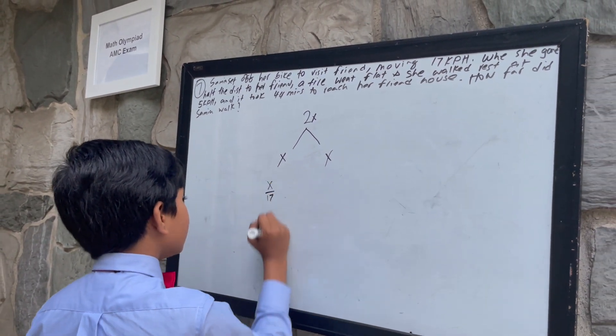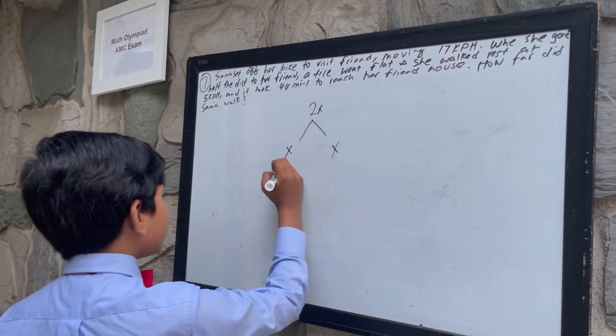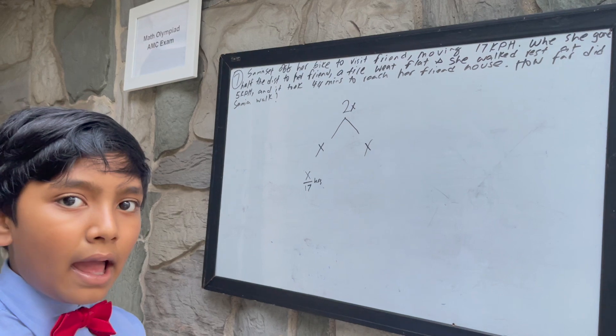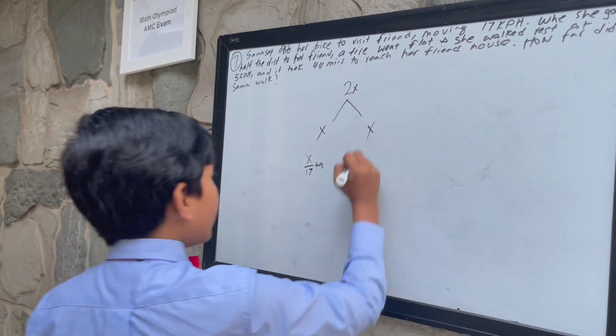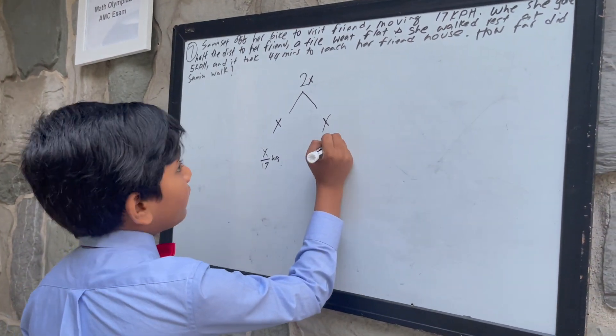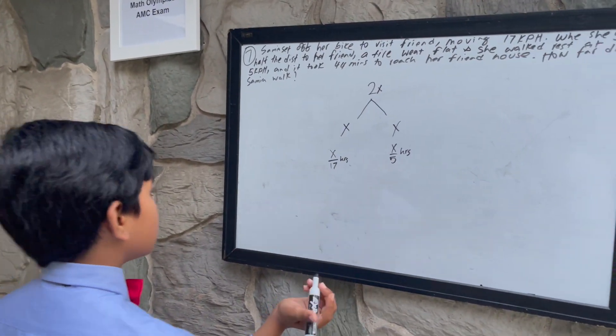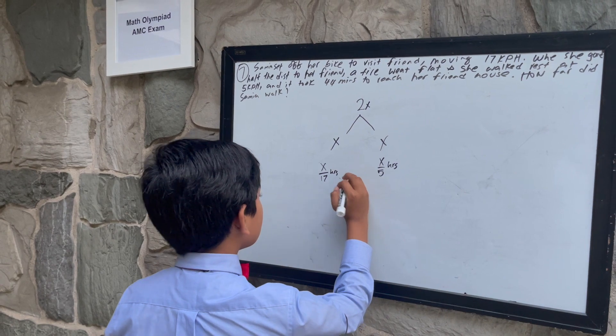So it took her X over 17 hours to make it halfway. And then it took her X over 5 hours for her to finish walking.